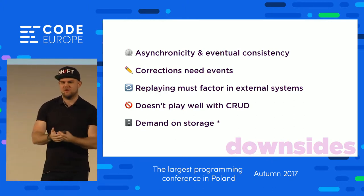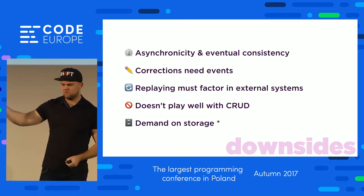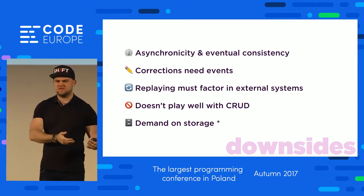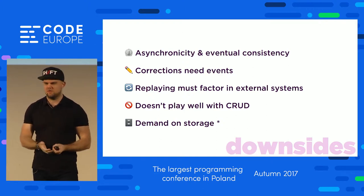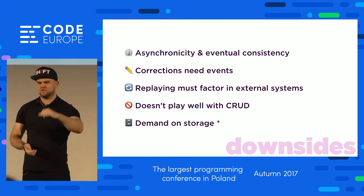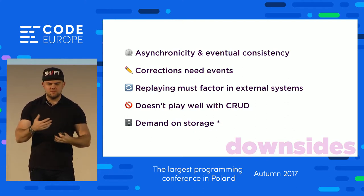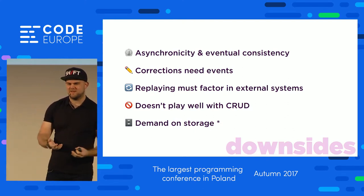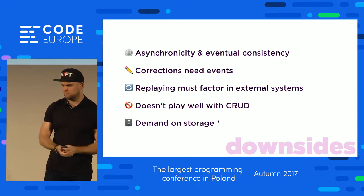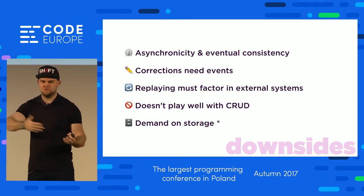Next, there are corrections. If you're making a change to something in the system, you can't just jump into the database and make a quick change — you actually have to have an event for that. Some cases allow you to invert values using existing events. Going back to the accountancy example, you could change 'transfer 100 pounds' to 'transfer minus 100 pounds,' but you lose a bit of the intent by doing that. Realistically, you need a proper event that says 'transaction reversed' or 'rejected,' so you have to build that in each time you want to undo something.